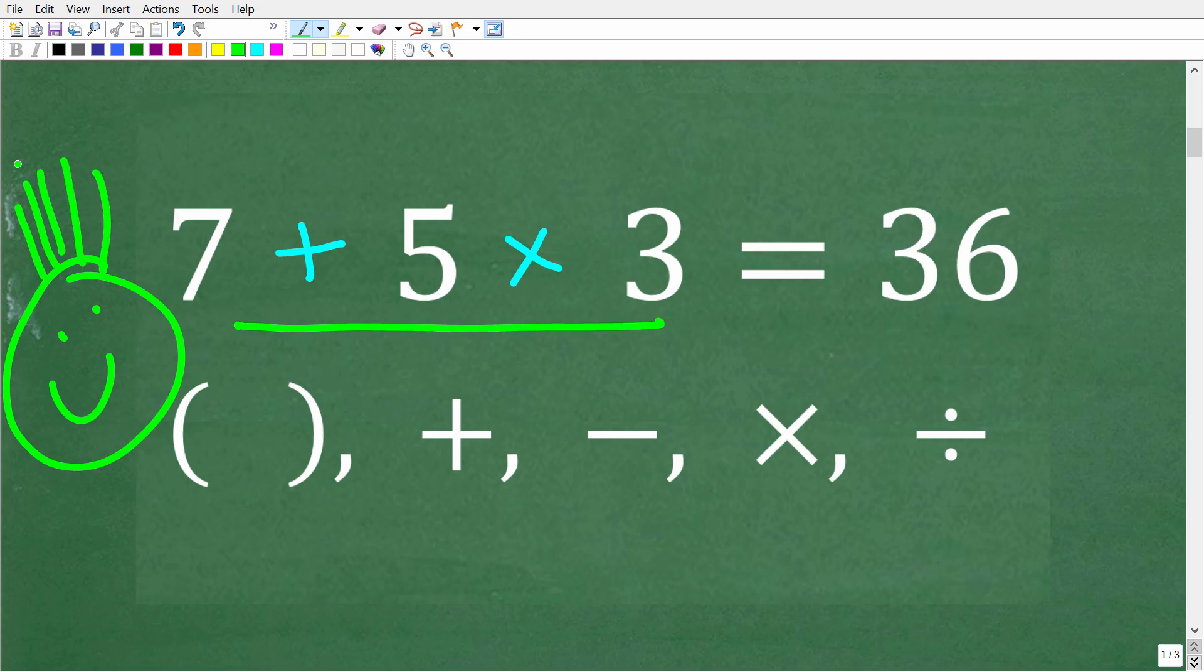So I know a lot of you are saying, hey, what are you talking about, Mr. UT Mathman? Again, 7 plus 5 is, of course, 12. And then 12 times 3 is 36. So why is not this combination of number operations the correct solution?